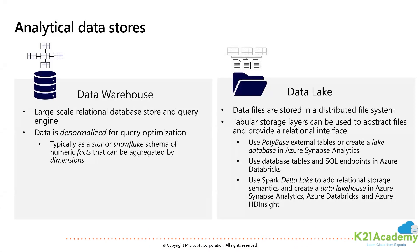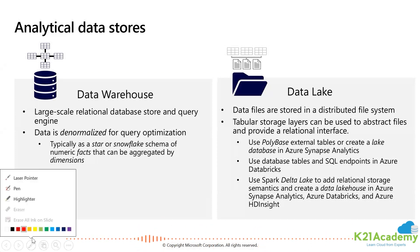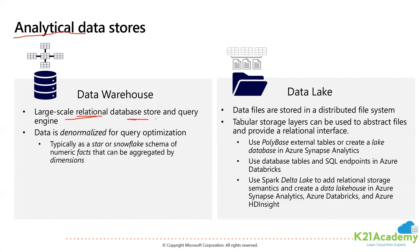So we discussed transactional data stores, how data is pulled from them, and how you create a pipeline to transform the data. Next, you are ready to dump the data into analytical data stores, which could be your data lake or your data warehouse. When you look at large-scale relational data in a data warehouse, the data is de-normalized for query optimization, because this is the last stage after processing.